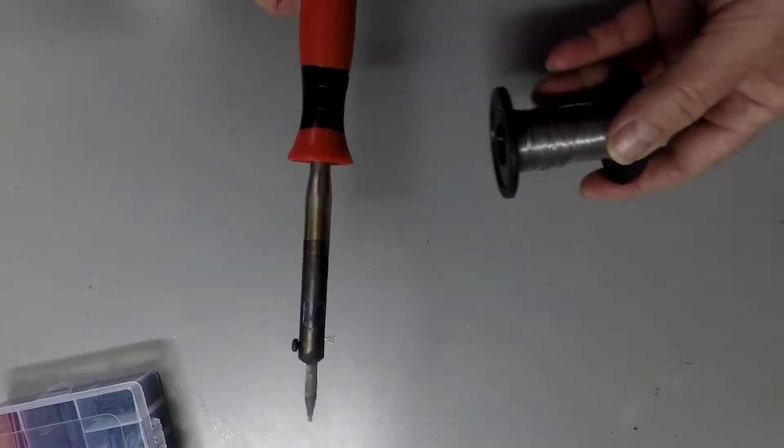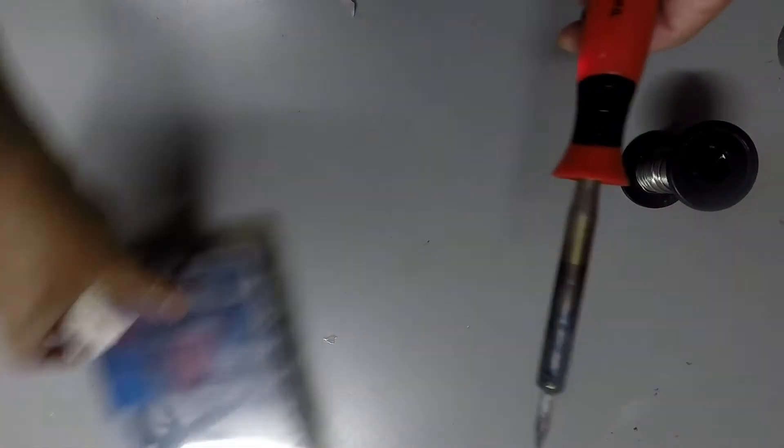So soldering. You need a soldering iron, a roll of solder, and some heat shrink.